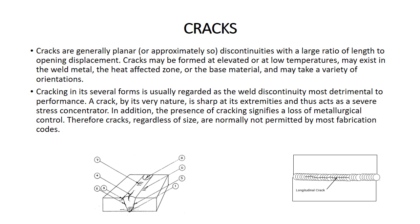Cracks are generally planar discontinuities with a large ratio of length to opening displacement. Cracks may be formed at elevated or low temperatures, may exist in the weld metal, the heat affected zone, or the base material, and may take a variety of orientations. Cracking in its several forms is usually regarded as the weld discontinuity most detrimental to performance. A crack by its very nature is sharp at its extremities and thus acts as a severe stress concentrator. In addition, the presence of cracking signifies a loss of metallurgical control. Therefore, cracks, regardless of size, are normally not permitted by most fabrication codes.